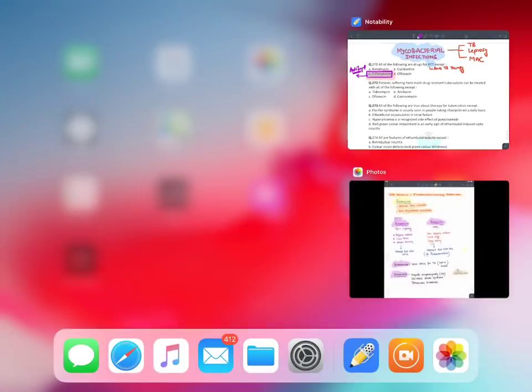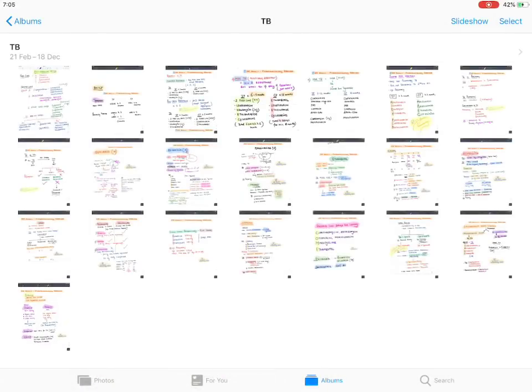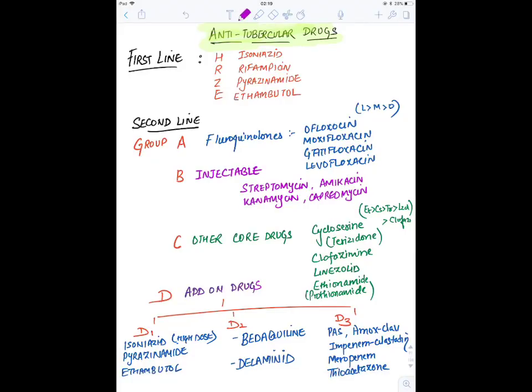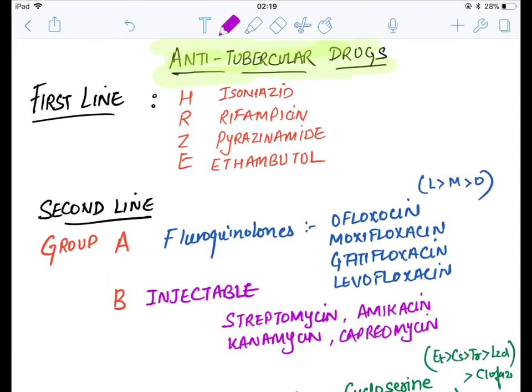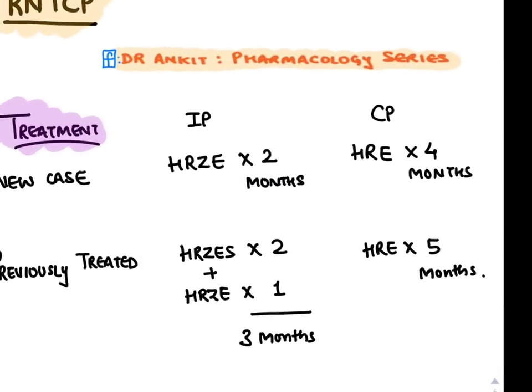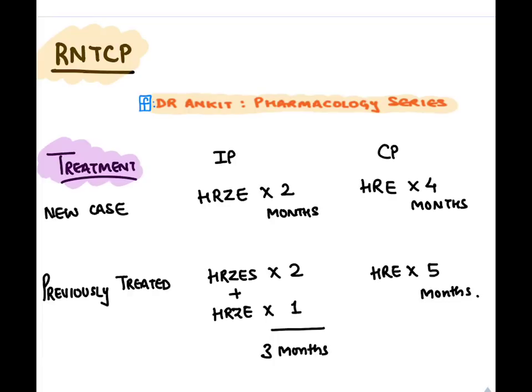Let's discuss what the anti-tubercular drugs are. We have first-line drugs: H, R, Z, and E. H stands for isoniazid, R for rifampicin, Z for pyrazinamide, and E for ethambutol. These 4 drugs are given for a new case of TB. We start with the intensive phase (IP) — all 4 drugs orally for 2 months.